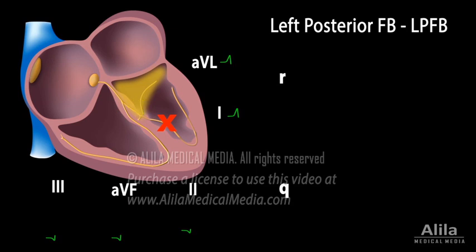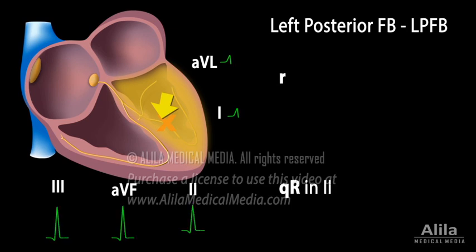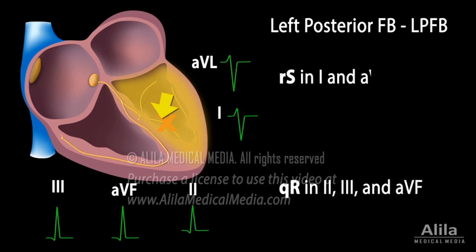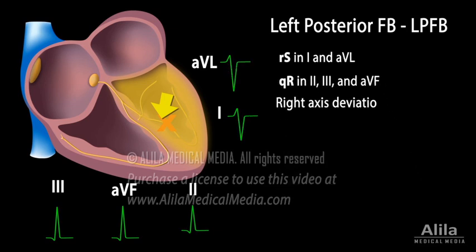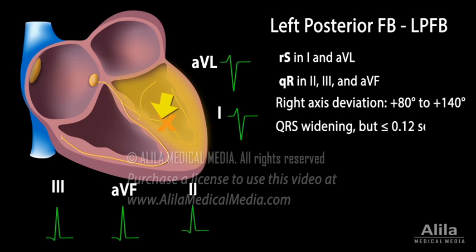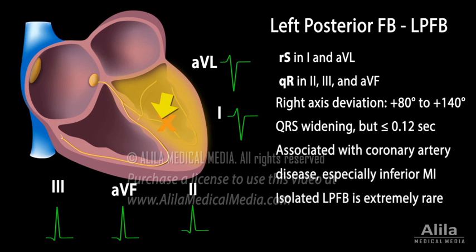As impulses spread to the rest of the ventricle, the major vector directs downward and to the right, producing a big R in inferior leads, big S in lateral leads, and a rightward shift in the cardiac axis. LPFB is almost always associated with coronary artery disease, especially myocardial infarction of the inferior wall.